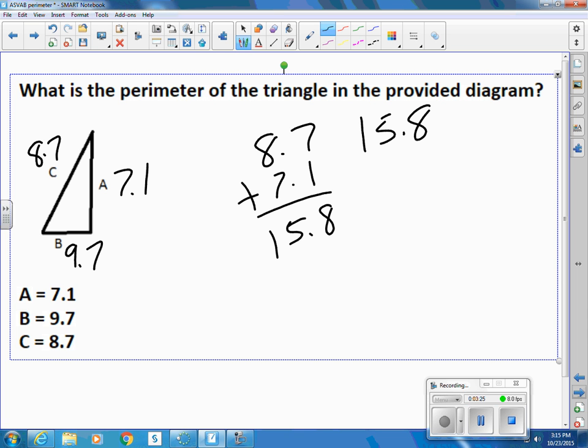We need to add our 9.7. 8 and 7 is 15. Carry the 1. 10 and 5 is 15. So the perimeter is 25.5, all the way around.